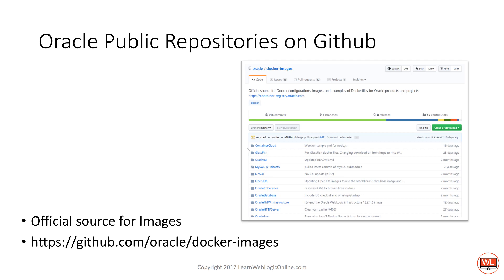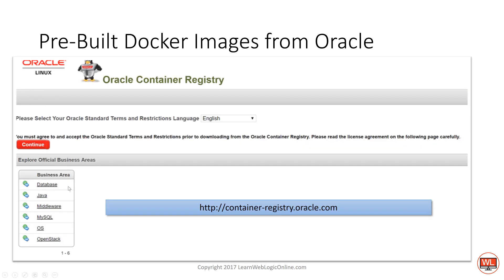All we need to do is clone this repo and build what we need. For paying customers with an Oracle support account, Oracle provides a curated and supported container registry that already has pre-built images. The GitHub repo requires us to download the Docker files and build the images ourselves, whereas the container registry at Oracle.com provides already-built images you can use if you're a paying customer.